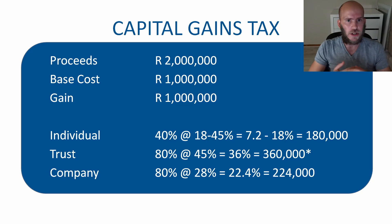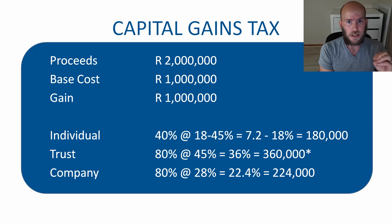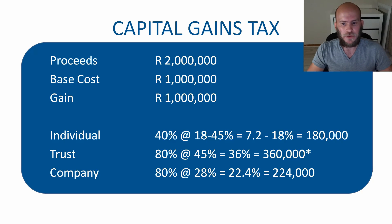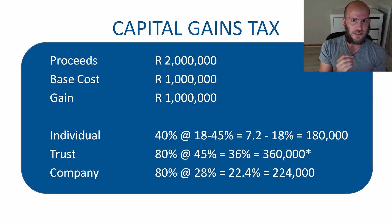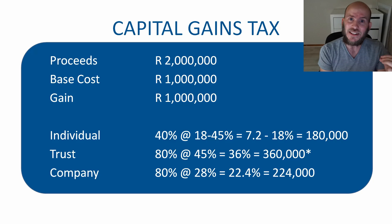Next point: capital gains tax. What happens if you sell your rental property? In this example, a rental house sold for two million rand with a base cost of one million rand gives a gain of one million rand. For an individual, the inclusion rate is 40 percent and the sliding scale of 18 to 45 percent applies, meaning capital gains tax is between 7.2 and 18 percent — so the maximum CGT for an individual would be R180,000. If a trust owned the property and pays the tax, the trust has an inclusion rate of 80 percent and a maximum tax rate of 45 percent.